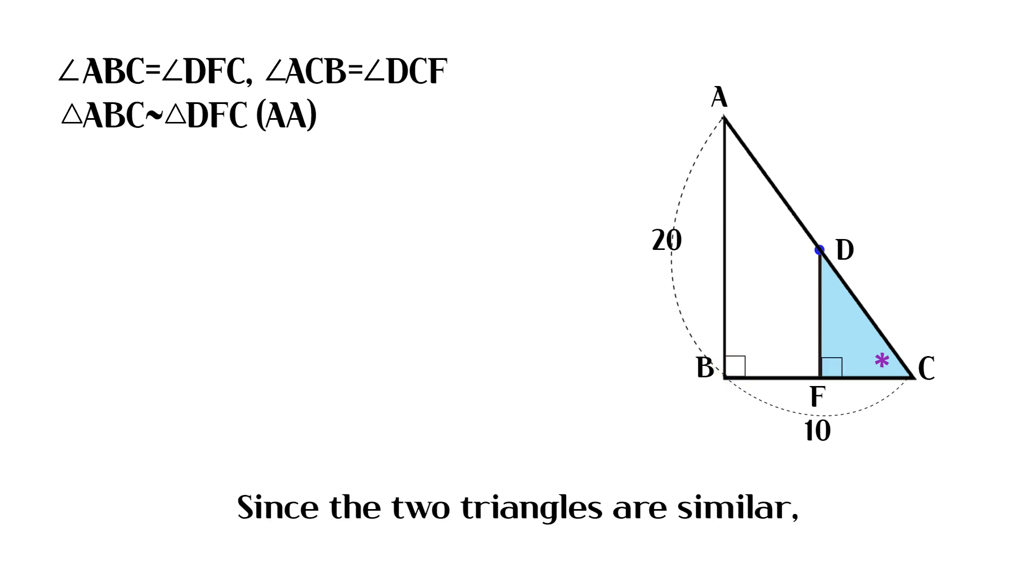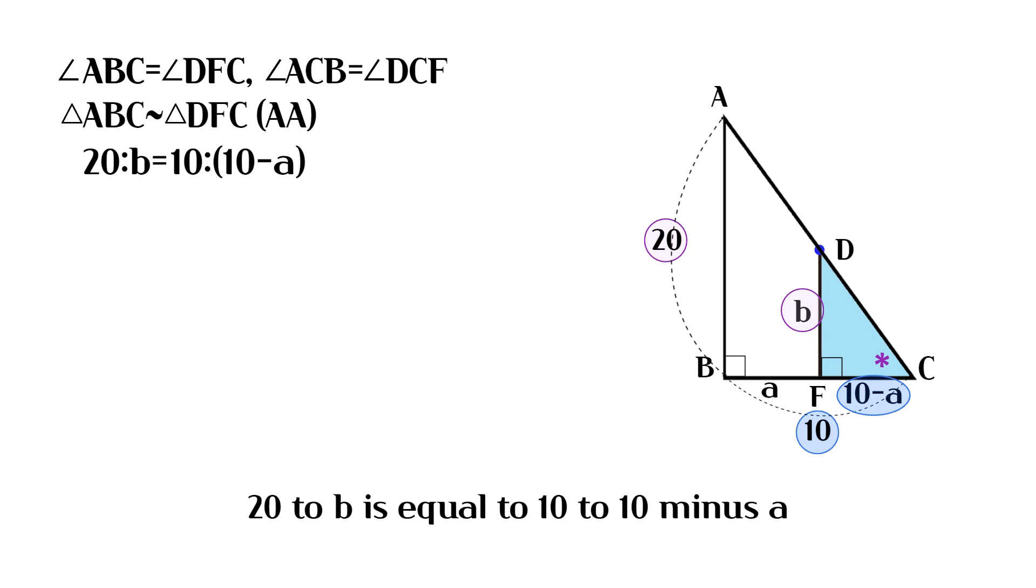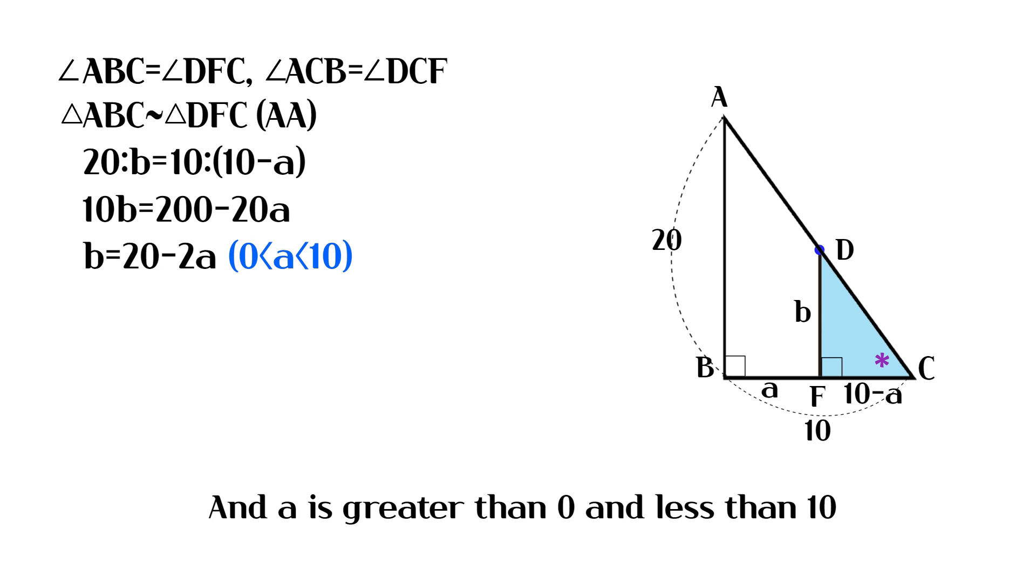Since the two triangles are similar, their corresponding sides are proportional to each other. 20 to b is equal to 10 to 10 minus a, and a is greater than 0 and less than 10.